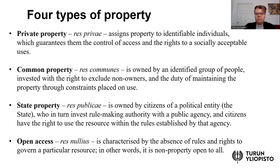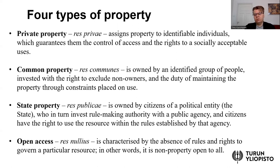The third type is state property, res publicai. It is similar to common property, but the number of owners is much larger — all the citizens of a political entity such as a country are in some sense owners of this property. For example, here in Finland, the state owns a large amount of forest — state forests exist — and the government can assign a public agency to manage this kind of state property. Citizens have the right to use this resource; for example, in Finland we can go to state-owned forest to pick berries, do fishing, hunting, or just hike in nature.